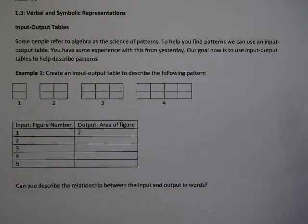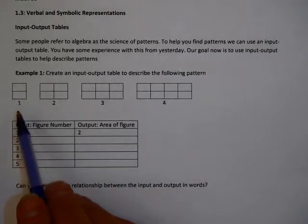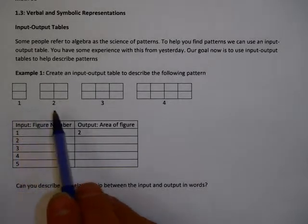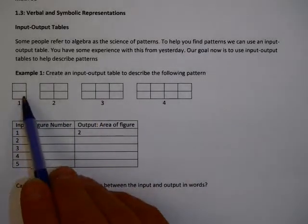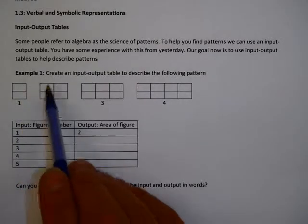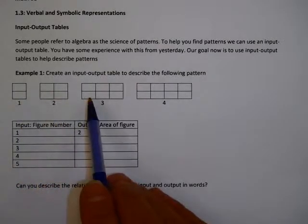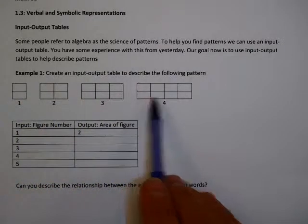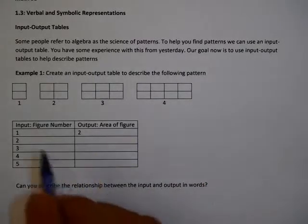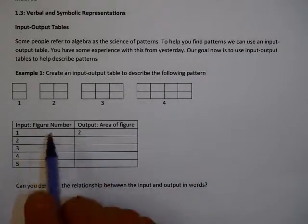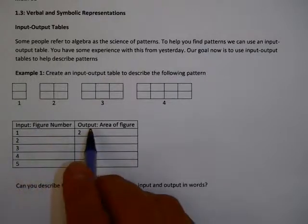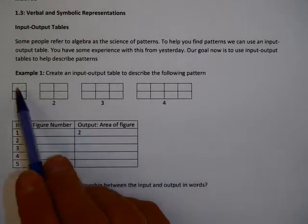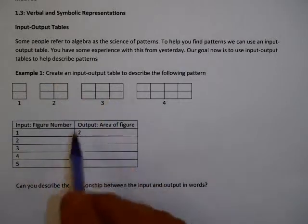For example, let's take a look at the following pattern. I have four figures here. The first figure is made up of two blocks, the second has four, the third has six, and the fourth has eight. So I'm going to make an input-output table where the input is the figure number and the output is the area of the figure — basically how many of these little blocks are in here.